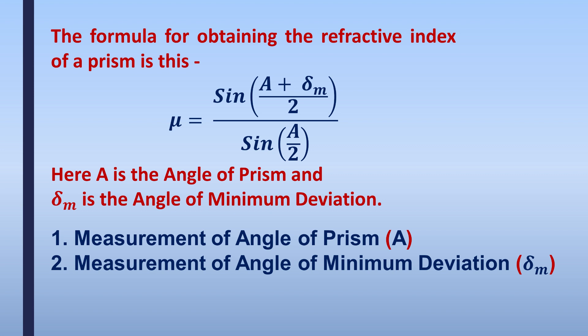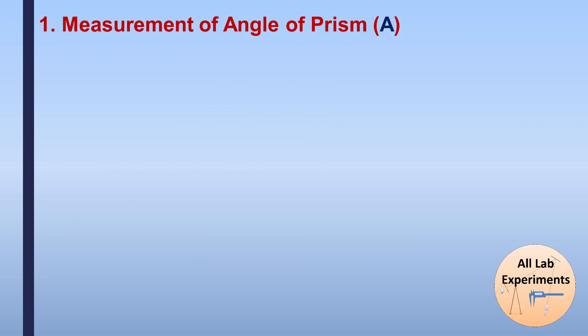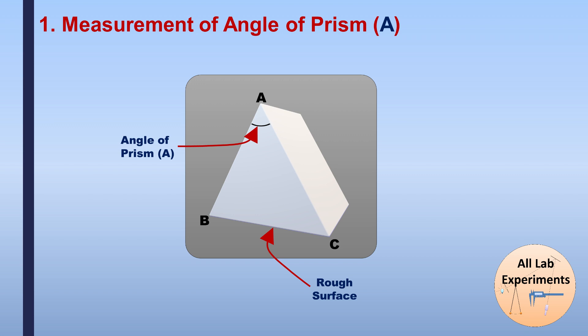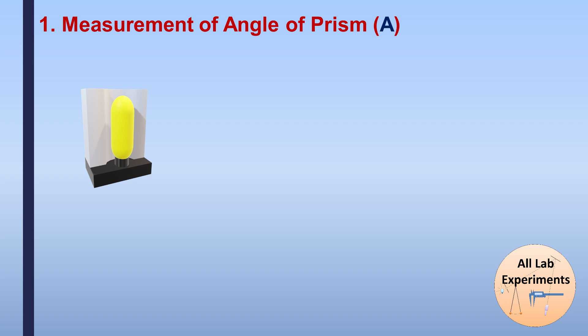We start with the first part for measuring the angle of prism. We take a prism and look at its triangular side with vertices A, B, and C. This prism has two smooth sides and one rough side, and the angle of prism A is opposite to this rough side.